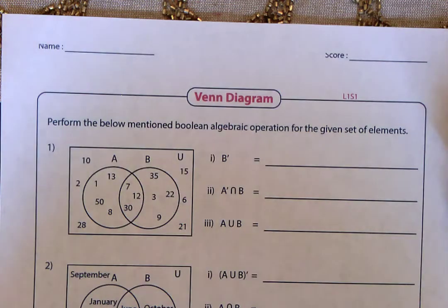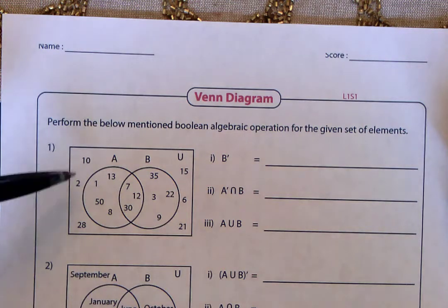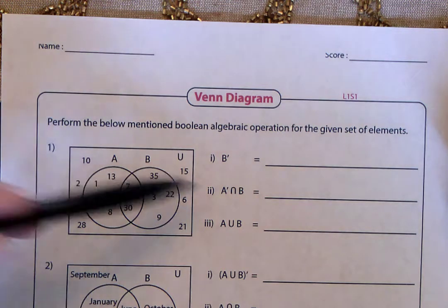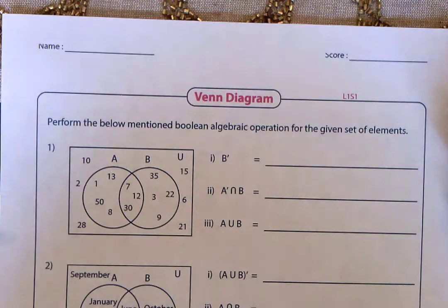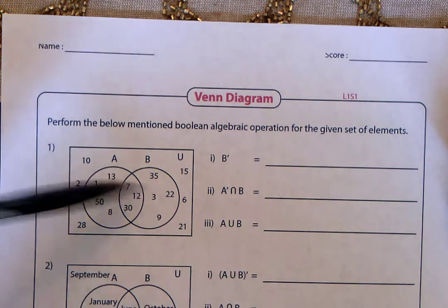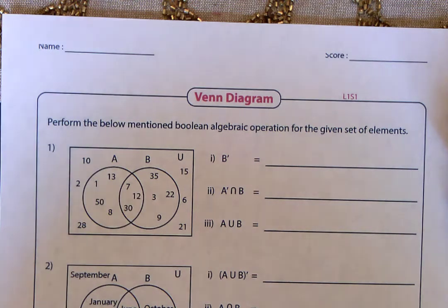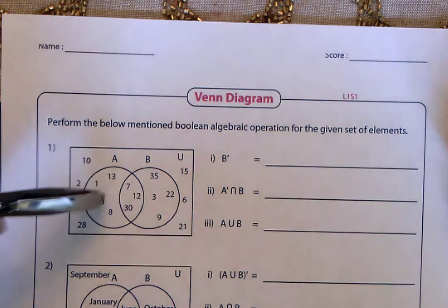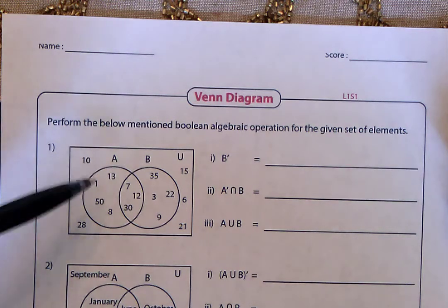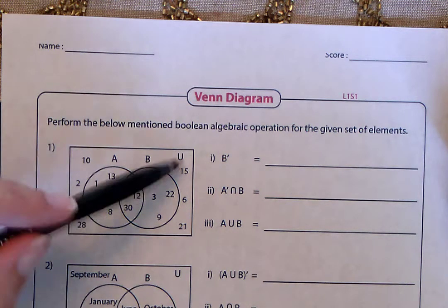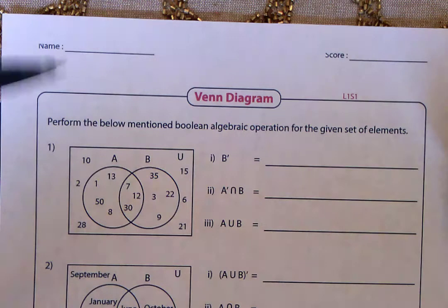Alright, geometry students, last video for the Venn diagrams. We're going to look at some of these sets and answer some questions. They've already filled out the Venn diagram for us. This is a two-circle Venn diagram — you can have three like we saw before, but this is going to be a two-circle. We have to look at this set of numbers, different numbers that have been placed in this diagram.